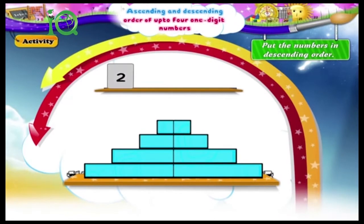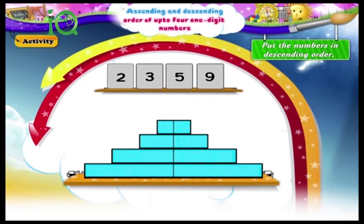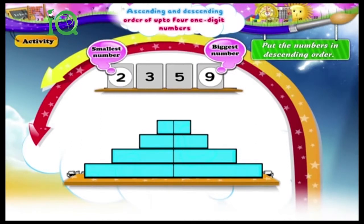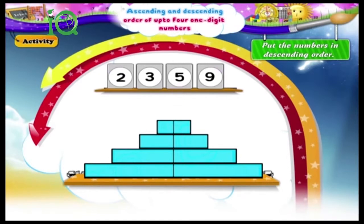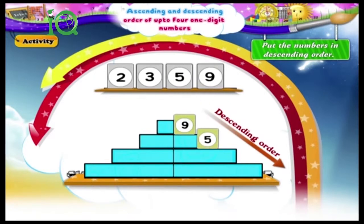Two, three, five, nine. The biggest number is nine. The smallest number is two. Between three and five, five is the bigger number. The numbers arranged in descending order are nine, five, three, two.